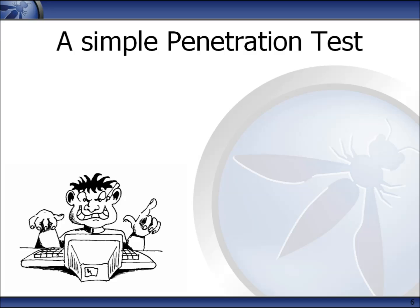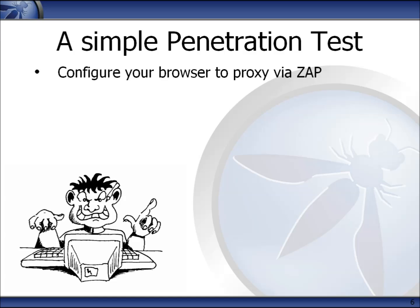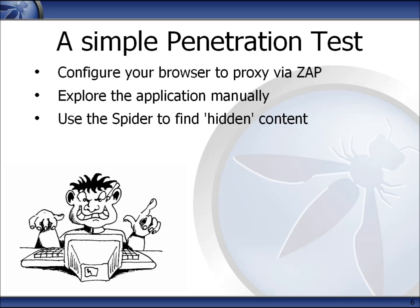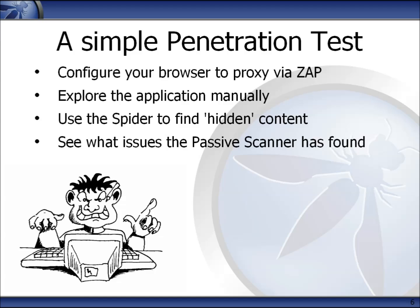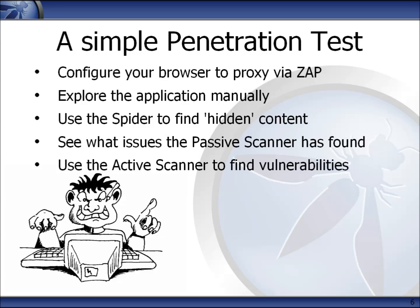To perform a simple penetration test using ZAP, I recommend that you configure your browser to use ZAP as a proxy, then explore the application manually, exploring all the functionality it provides. Use the spider to find pages that you have missed or were hidden from you. You can just use the spider, but I would recommend exploring manually first, as you are more likely to provide sensible inputs to the forms the application uses. You may well find that by this stage the passive scanner has already found some issues, but it is the active scanner that is likely to find the most serious issues.